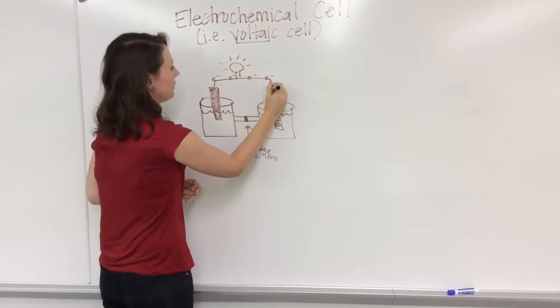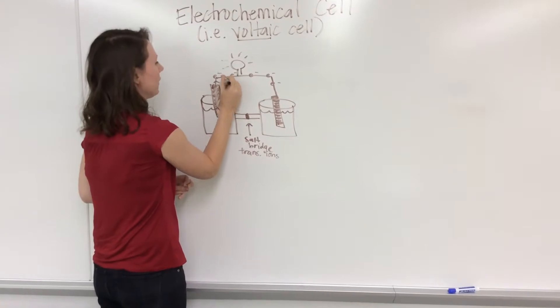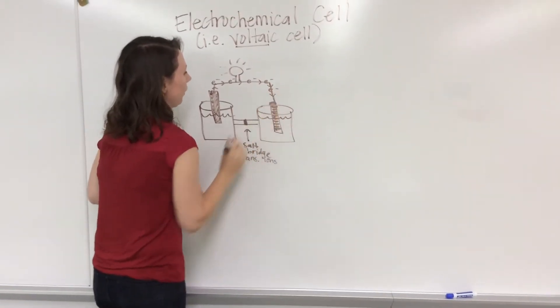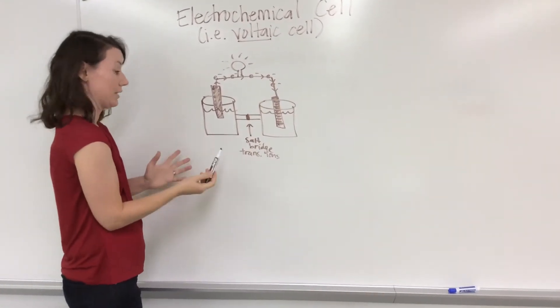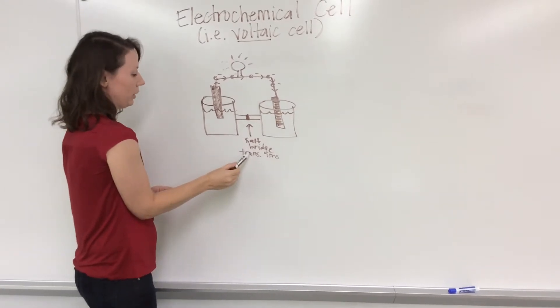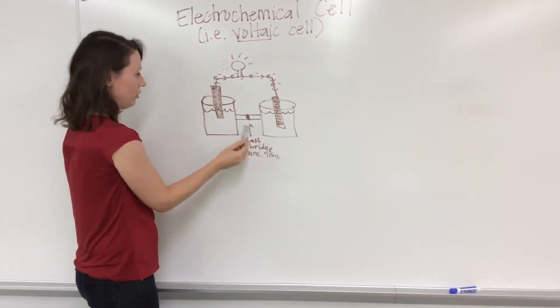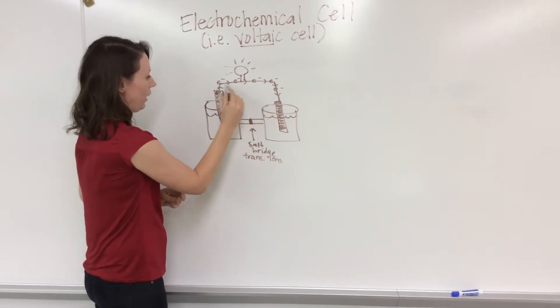This is a really common mistake I see students make. I will ask students on an exam, what is transferred through the salt bridge? And they'll tell me electrons. That's not correct. The purpose of the salt bridge is to transfer ions between the two sides, whereas the electrons are what travel through your wire.